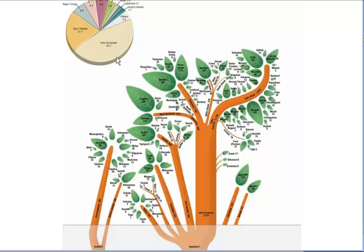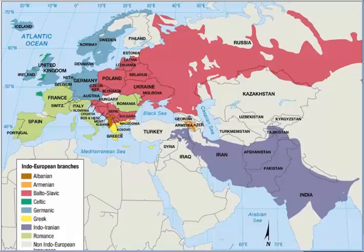I want to go to figure 5.9 and show you the land area that's covered by this language family. Here we are in figure 5.9 and it shows you the extent of the language family. We see that southern European countries are generally Romance language.